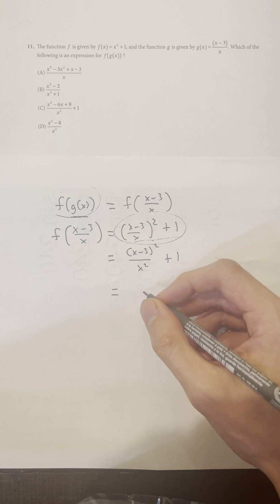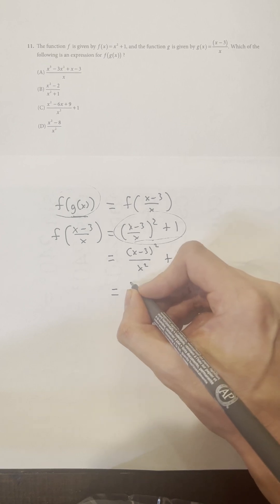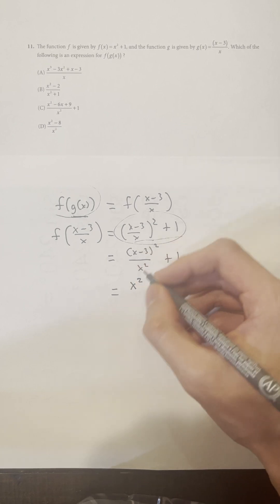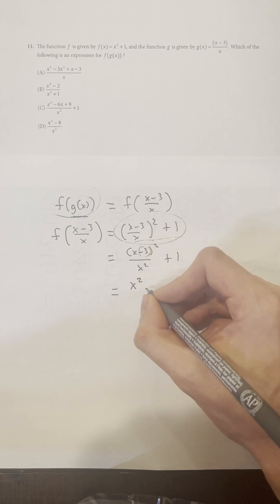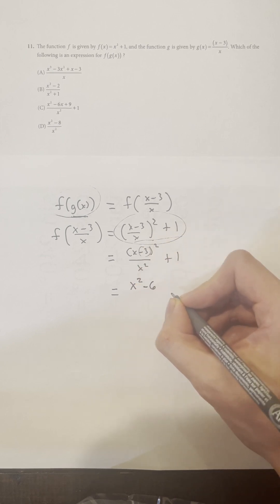Well, you can FOIL, but if you know the shortcut, it's x² and then I doubled this, so minus 6 times x.